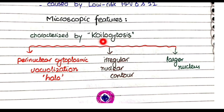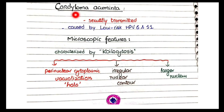The second feature of koilocytosis is irregular nuclear contour — the borders of the nucleus are not regular, as seen in the diagram. The third feature is a large nucleus compared to normal. These three features — perinuclear cytoplasmic vacuolization, irregular nuclear contour, and large nucleus — collectively constitute koilocytosis, which is the hallmark of condyloma caused by human papilloma virus.